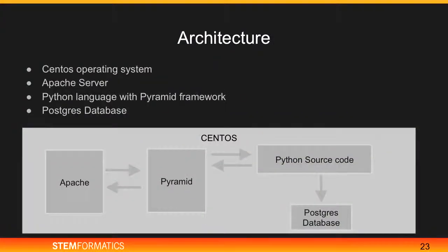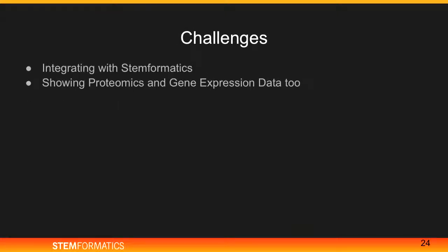This is the architecture for OmicsView. It is pretty much similar to Stimformatics, as we wanted to integrate it with Stimformatics. We have Apache, Pyramid, Python, and a Postgres database. The biggest challenge after getting the beta OmicsView working is to integrate it with Stimformatics and to show proteomics and gene expression data.